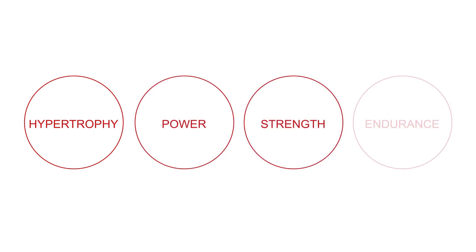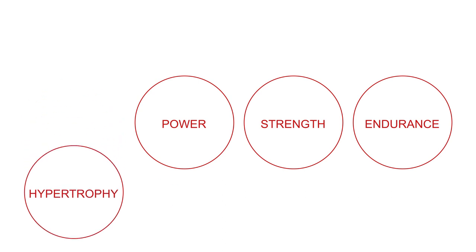Hypertrophy — gains in muscle size — becomes most important during early adolescence, usually after PHV, when an abundance of growth hormones adds significant value to training. The model considers hypertrophy as an extremely minimal part of early development and of less importance than power, strength and endurance in early adulthood.